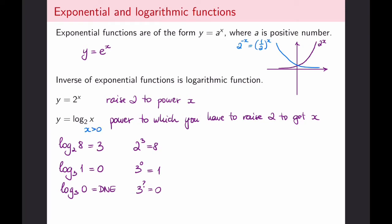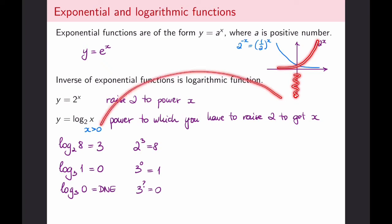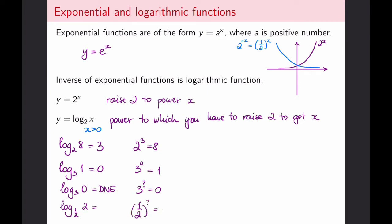x must be strictly greater than 0, whereas there was no restriction on the domain for exponential functions. Rather, the range of the exponential function — all positive numbers — is exactly what becomes the domain of its inverse. However, logarithms can in fact be fractional or even negative. For example, logarithm base (1/2) of 2: to get from 1/2 to 2 you flip the fraction, which corresponds to a negative power — in this case, minus 1. So the logarithm, while it cannot have negative inputs, can have a negative output.